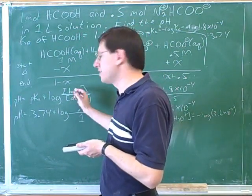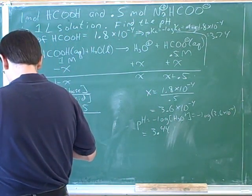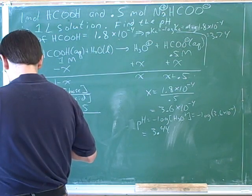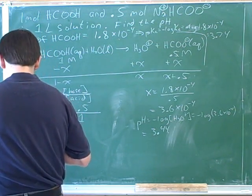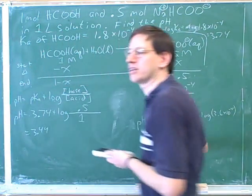So when you use the Henderson-Hasselbalch equation, we're putting in the starting amounts. And 3.74 plus the log of 0.5 over 1 goes 3.44, which as we saw works because that's what we got over here.